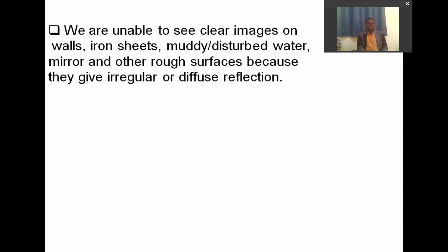We are unable to see clear images on walls. If your wall was polished, there would be no need to buy a plain mirror. But since walls are just smooth and not polished, we cannot see clear images of ourselves — that's why we buy plain mirrors, which are polished and give off clear images. Muddy or disturbed water also cannot give off a clear image because it is disturbed. There are also other rough surfaces which give off irregular or diffuse reflection.